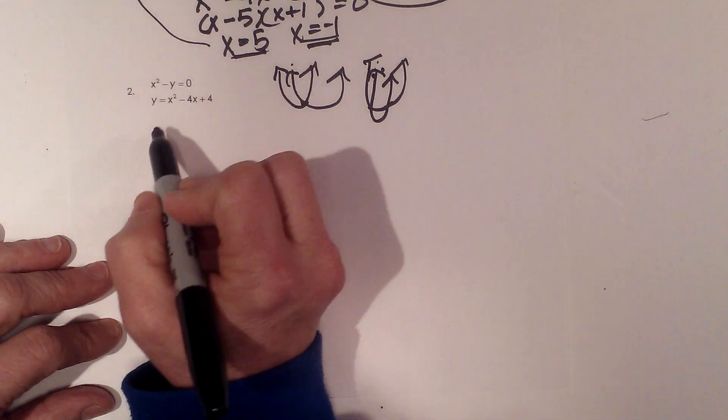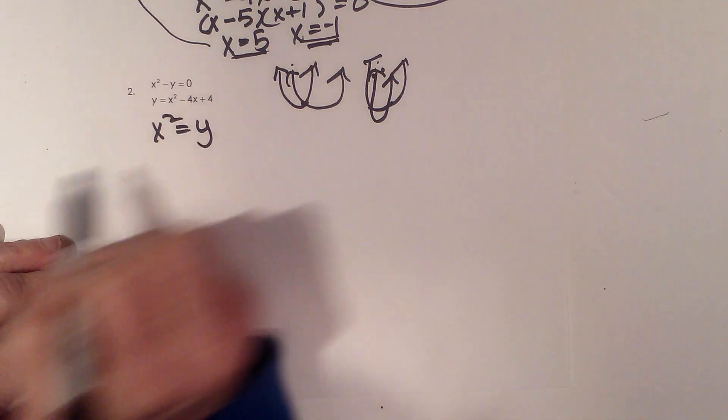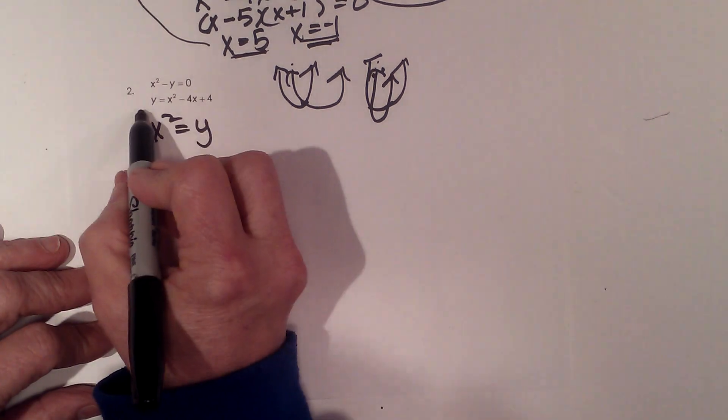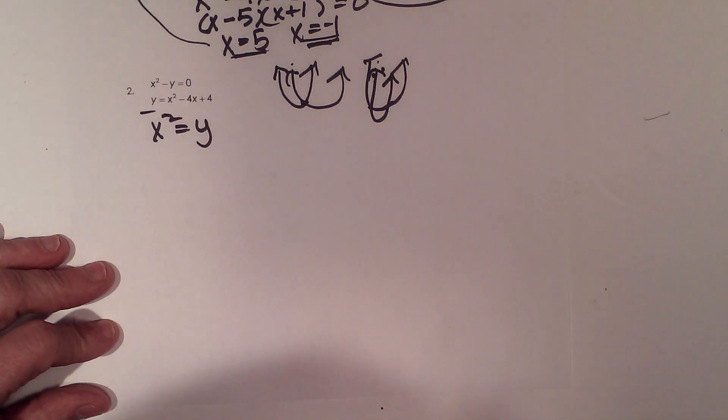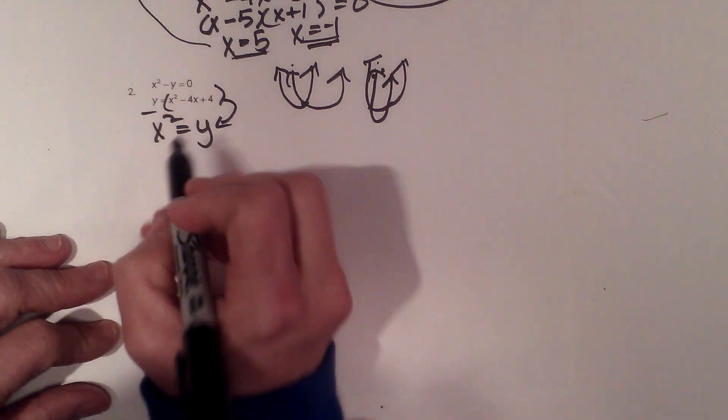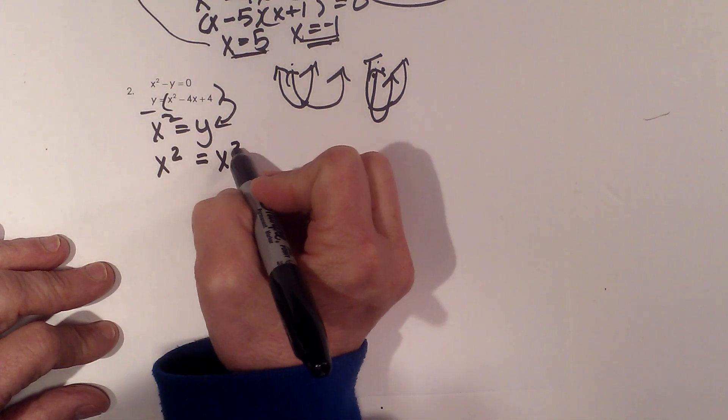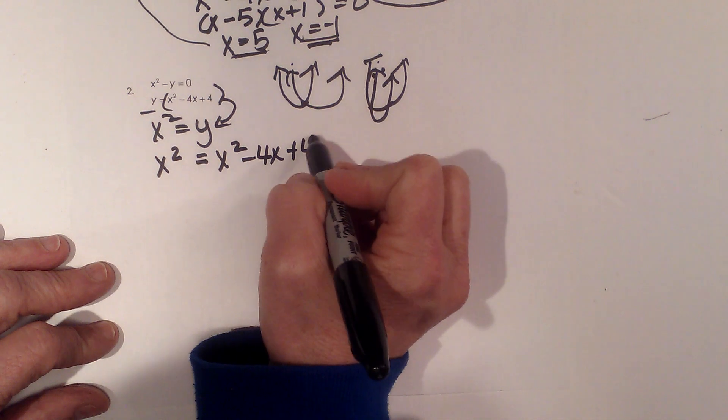I'm going to take the first equation and solve it for y. So I'm going to get x² = y. Now the second equation is already solved for y. So let's substitute x² - 4x + 4 right here for y. So I'm going to get x² = x² - 4x + 4.